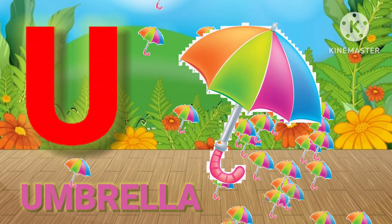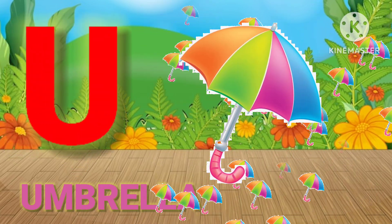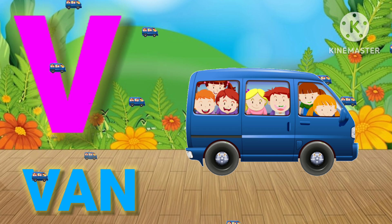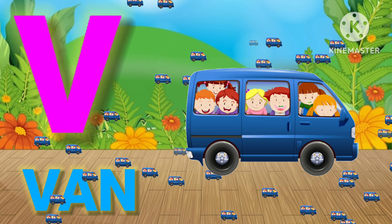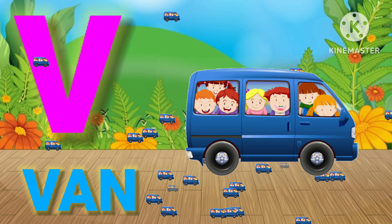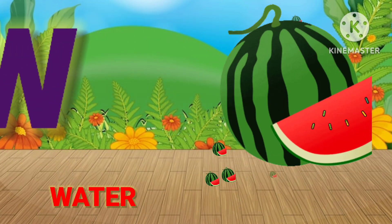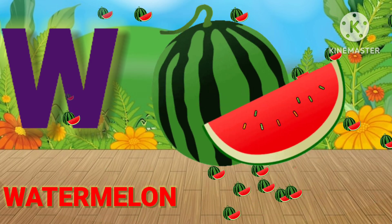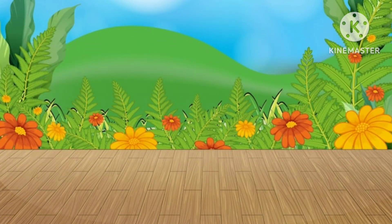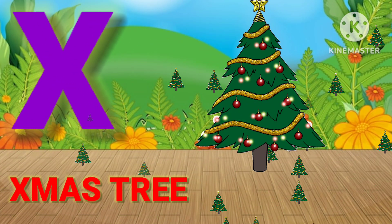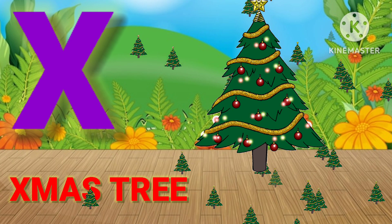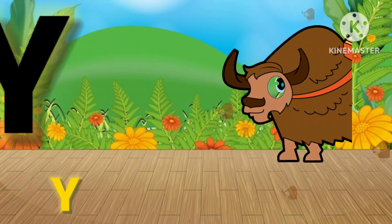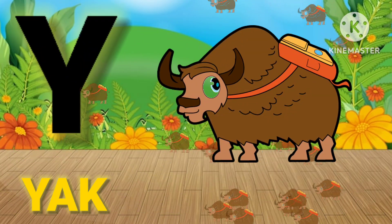U for Umbrella, V for Van, W for Watermelon, X for Xmas Tree, Y for Yak.